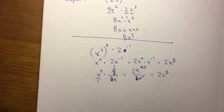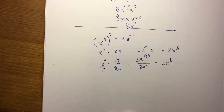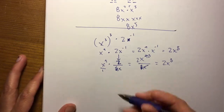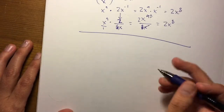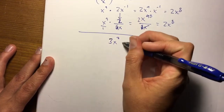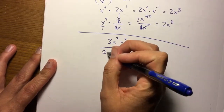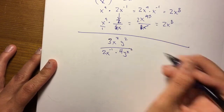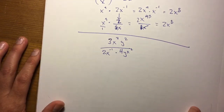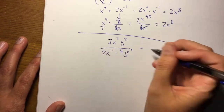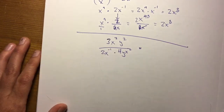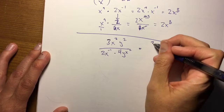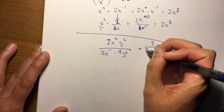That one got a little weird, so let's try another one. It's going to look like a fraction — don't freak out. We have 3x squared y squared divided by 2x to the negative 1 times 4yx squared. So how can we simplify this? I like to deal with the coefficients first: nothing happens to the 3, but the 2 and the 4 multiply, giving you an 8.